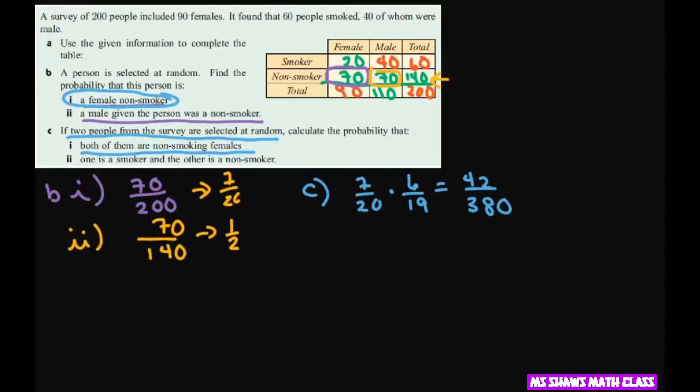And then let's calculate the C double I. One is a smoker and the other is a non-smoker. So for that one, I did smokers is 60 out of 200 times. And then the other is a non-smoker. The non-smoker is 140, but now that's only out of 199.